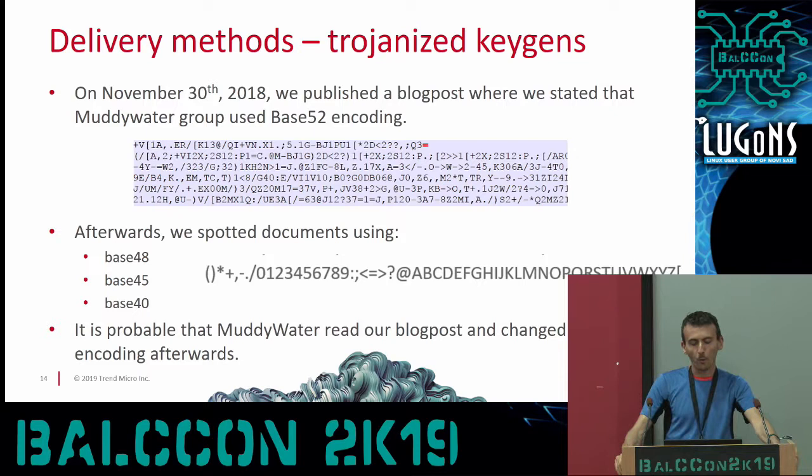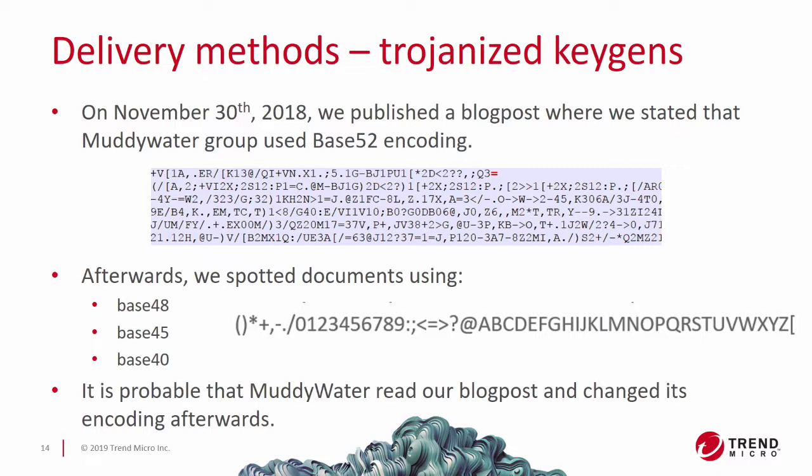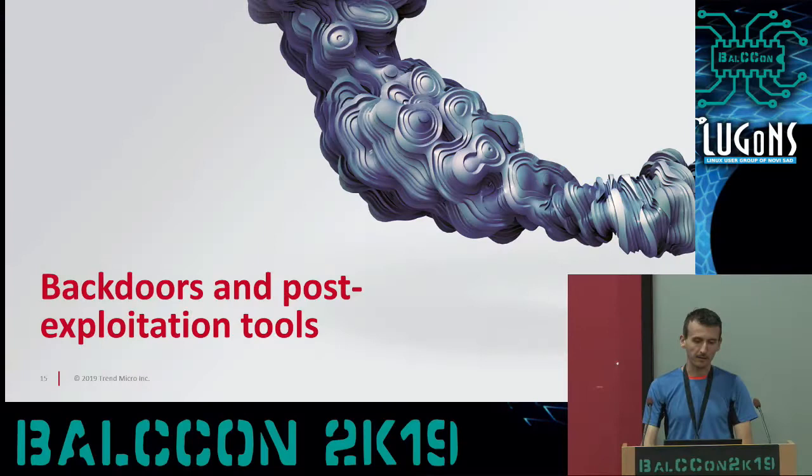We mentioned this in a blog post about a year ago, and after that we noticed they changed it a little bit. We found instances where the alphabet was shorter - base45, base48, base40 - so it seems this threat actor is reading and looking online to see who publishes what about them, and they just change their malware based on that.